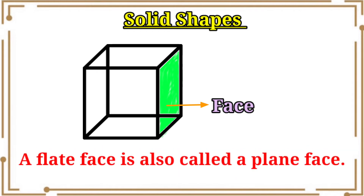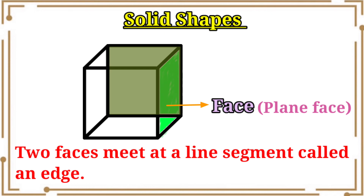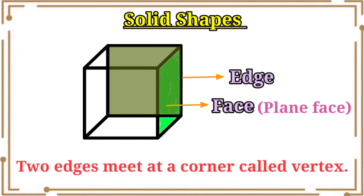A flat face is also called a plain face. And two faces meet at a line segment called an edge. Then two edges meet at a corner called vertex.